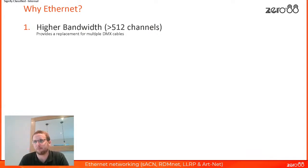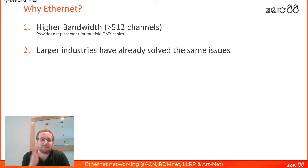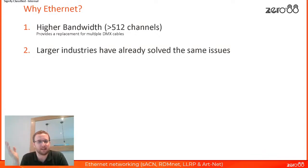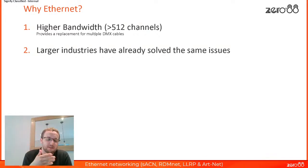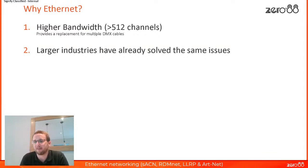Ethernet gives us much higher bandwidth than DMX — many more channels down a single cable. The second reason specifically why Ethernet is that much larger industries have had the same problems in the past. They needed to get large amounts of data from one place to another quickly and reliably. The main industry that solved this is the IT industry — they solved it with Ethernet. So it makes sense for us to jump on that same bandwagon.